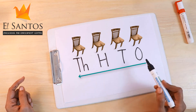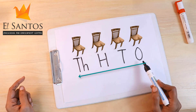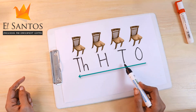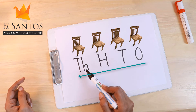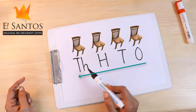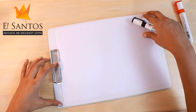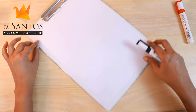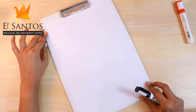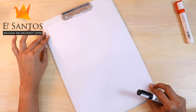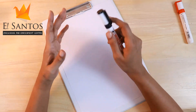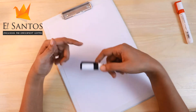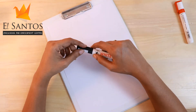Ones, tens, hundreds, thousands. Now let's look at some numbers.